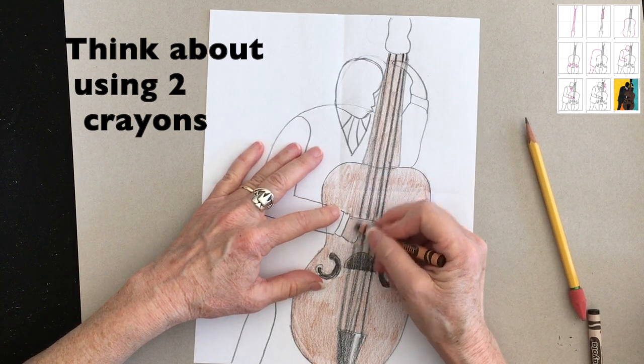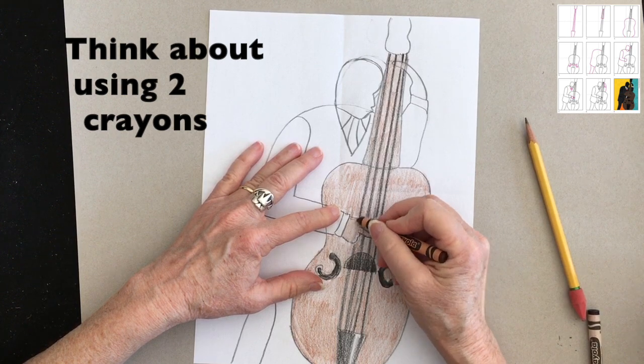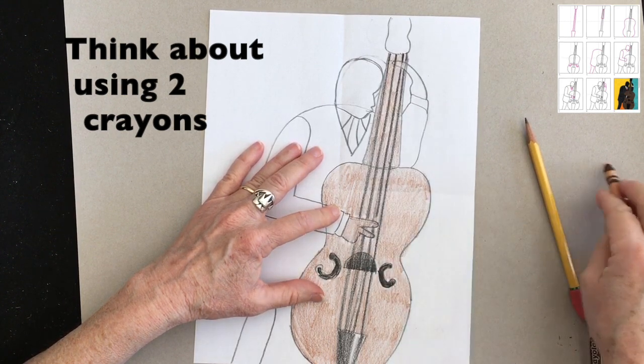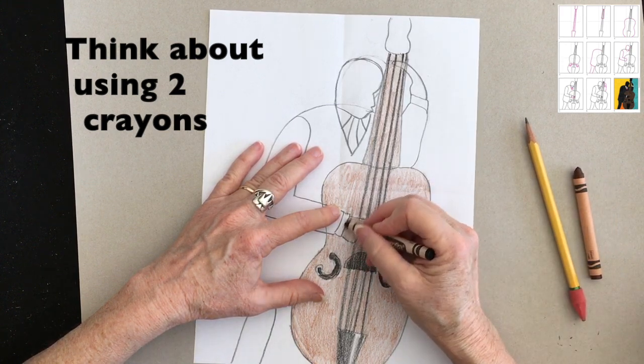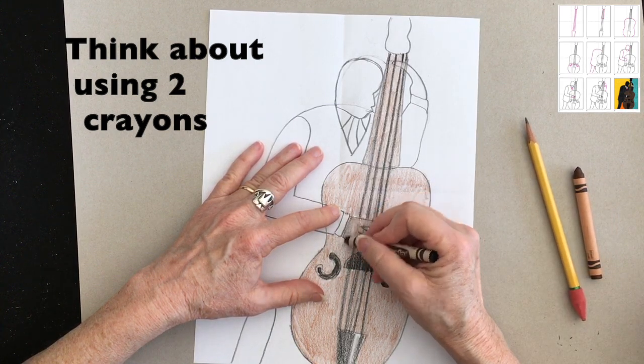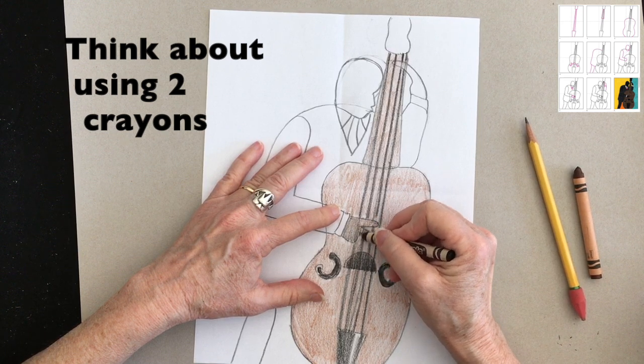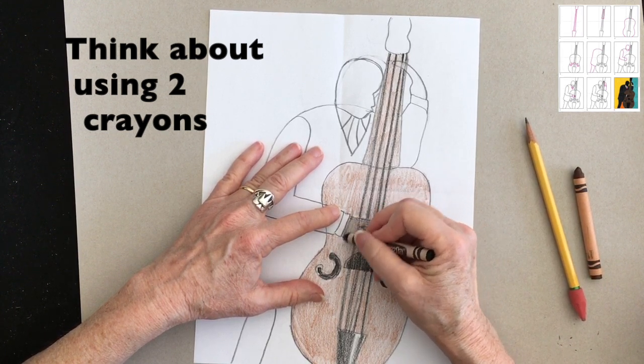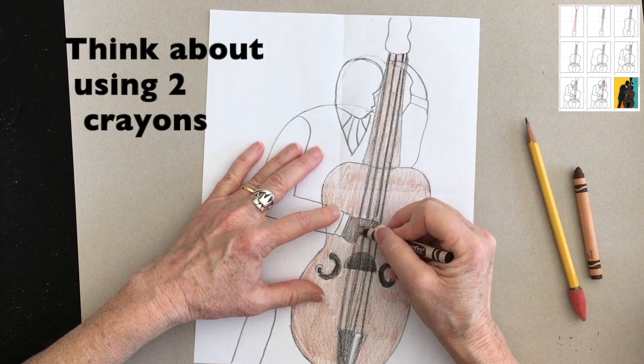So when it comes to coloring in the skin, I would consider using two or three different crayon colors. Because right now, there's not enough contrast with the bass that I picked. But if I mix brown and black together, I can get a nice, rich skin tone for my bass player.